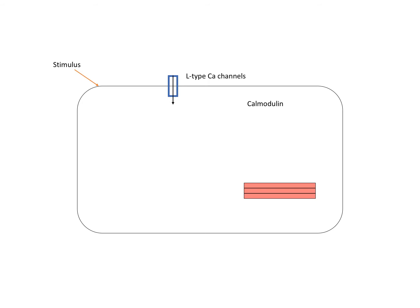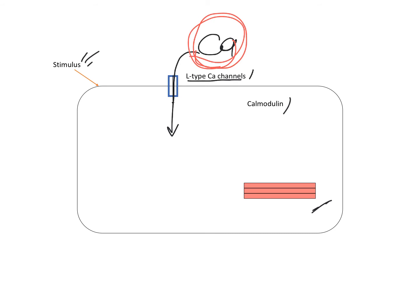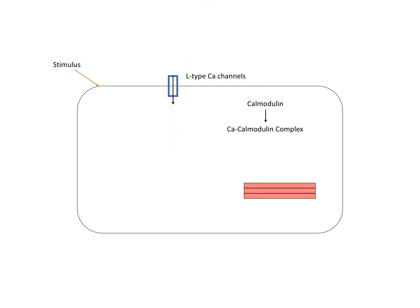Let's start with smooth muscle contraction and relaxation. This smooth muscle cell has L-type calcium channels and calmodulin inside of the cell. When a stimulus comes, which can be a neurotransmitter, stretch, or hormones, the L-type calcium channels are activated and extracellular calcium influxes into the cell. In smooth muscle contraction we are using extracellular calcium, and it comes into the inside of the cell.